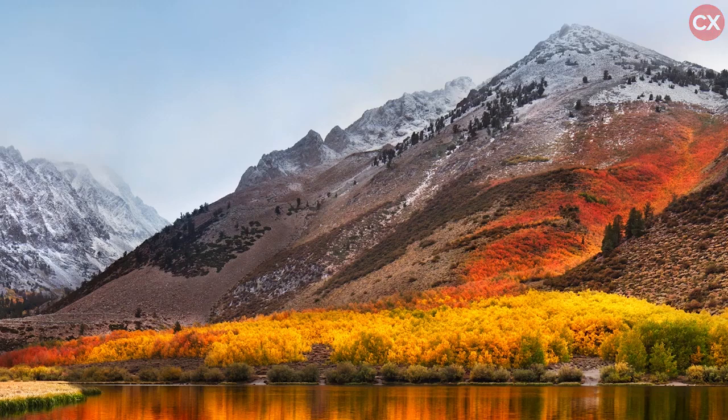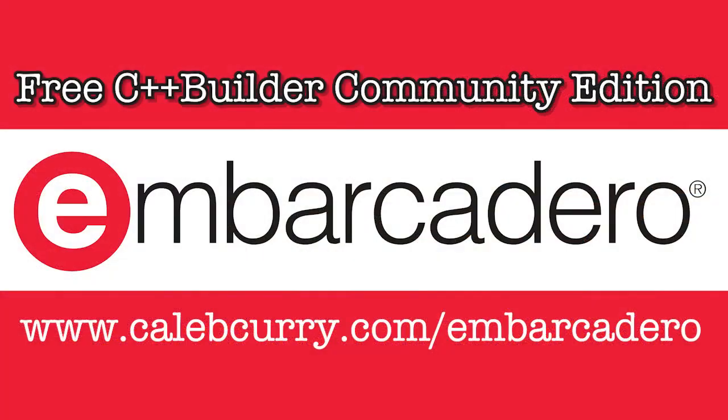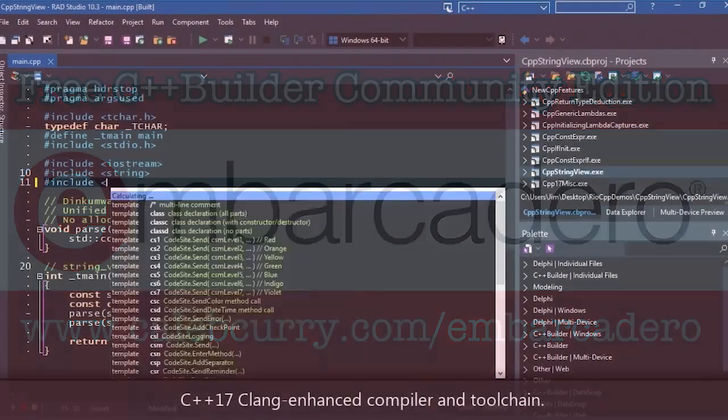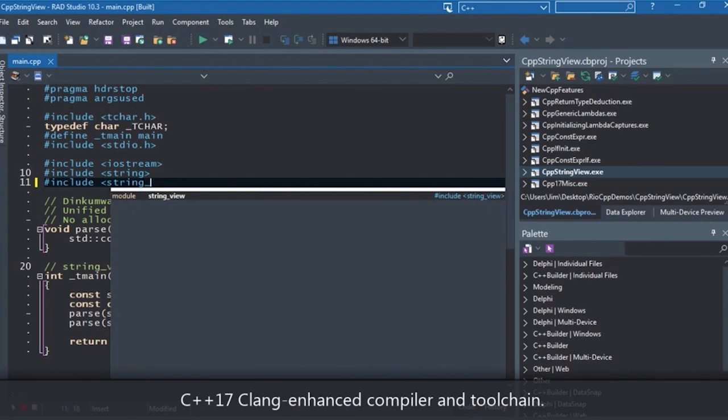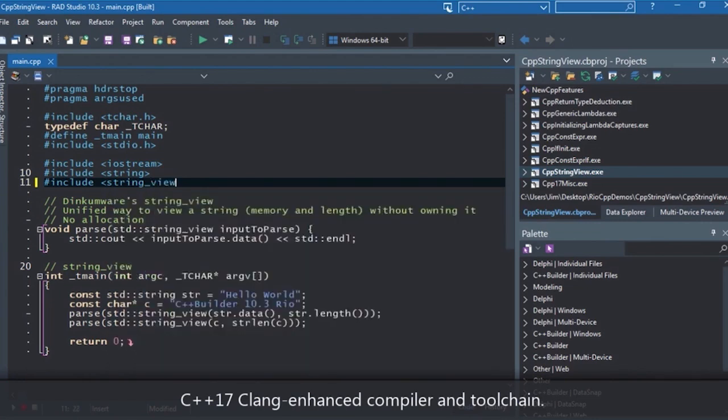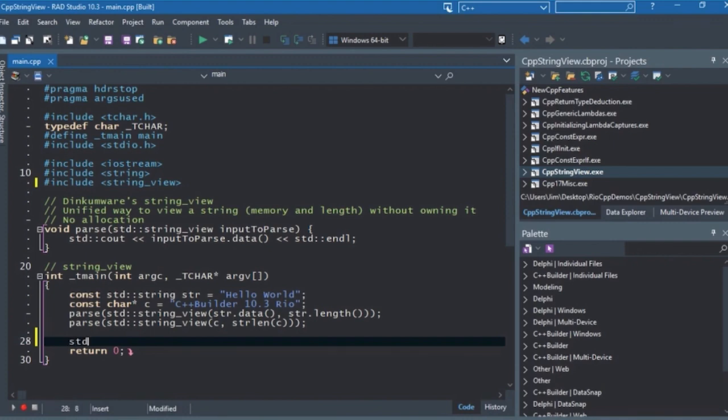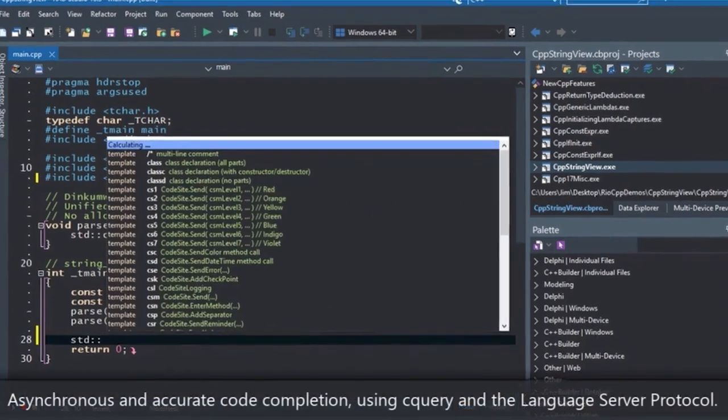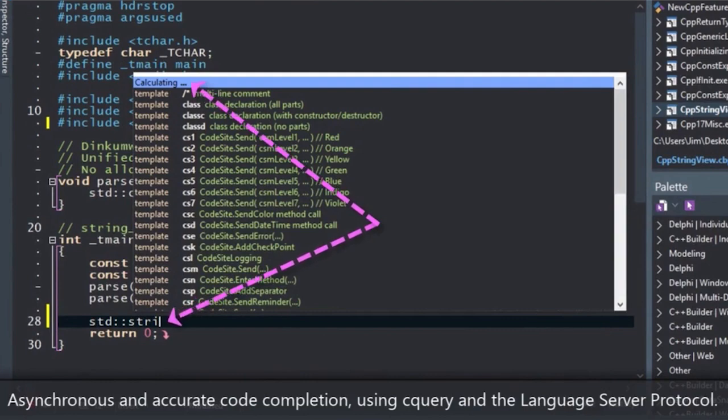Before we dive in, I wanted to give a special shout out and thank you to Embarcadero who is sponsoring this series. Embarcadero offers the C++ Builder IDE. What exactly is C++ Builder? Well, it's a software where you develop your C++ code, but it allows you to deploy to iOS, Android, Windows, and Mac, all from a single C++ code base.